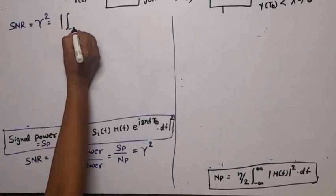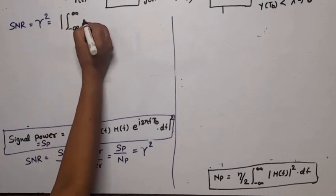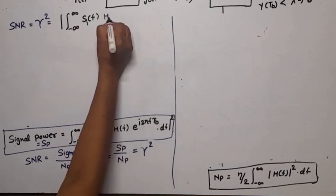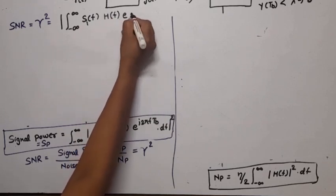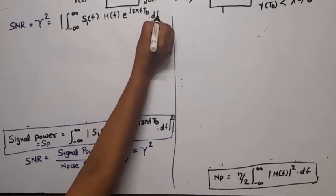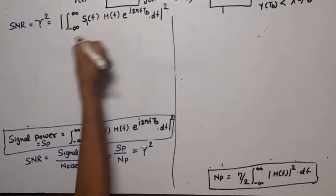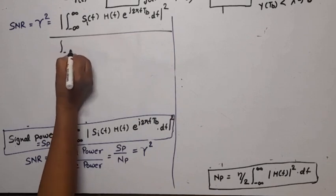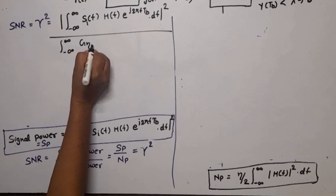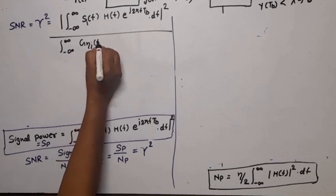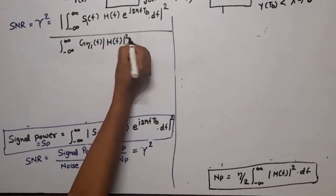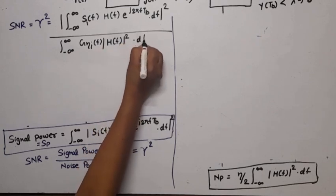Putting the expressions together, SNR = | integral from −∞ to ∞ of S_i(f) · H(f) · e^(j2πfT_b) df |² divided by [ (η/2) · integral from −∞ to ∞ of |H(f)|² df ].